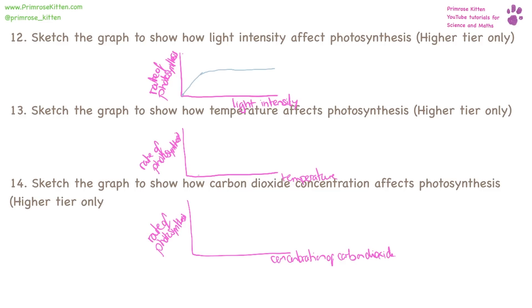How does temperature affect photosynthesis? As the temperature slowly increases, we get an increase in the rate of photosynthesis until we reach an optimal temperature. Then it comes down as the proteins get denatured. For carbon dioxide concentration: very similar to light intensity — when we have no carbon dioxide, we have no photosynthesis. The rate increases as CO₂ increases, but only up to a point, due to limiting factors.